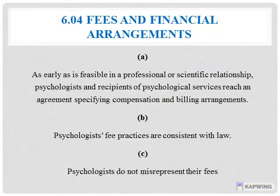Standard 6.04 covers fee and financial arrangement, with five guidelines for psychologists. Section a states that as early as is feasible in a professional or scientific relationship, the psychologist and recipient of psychological services reach an agreement specifying compensation and billing arrangement.